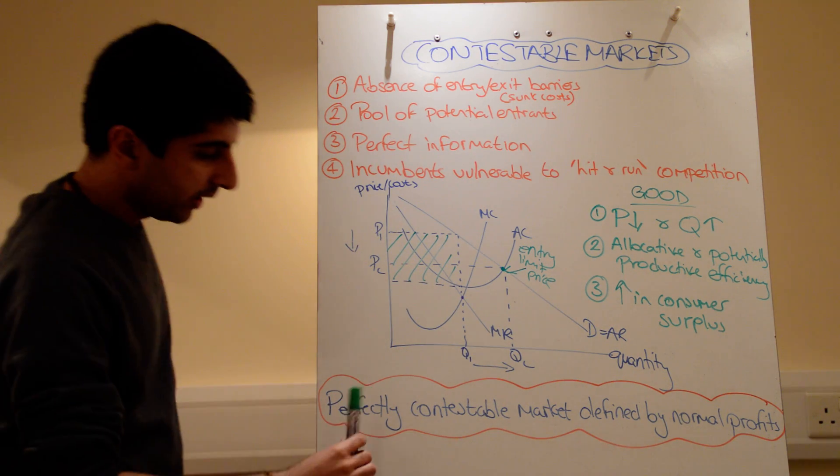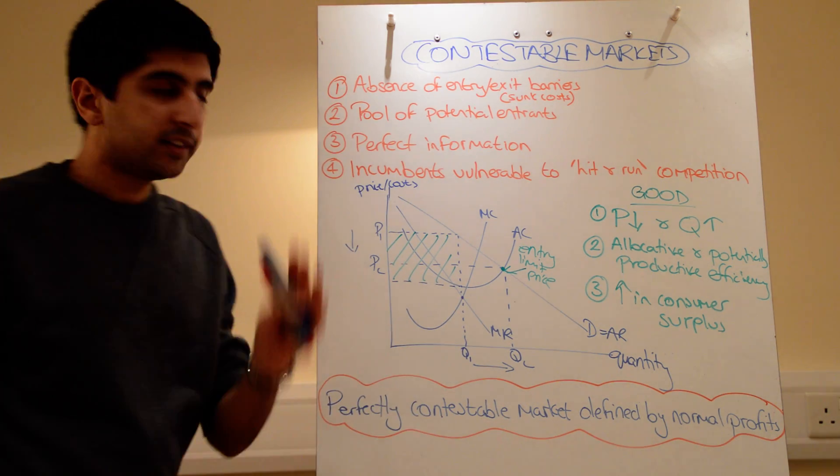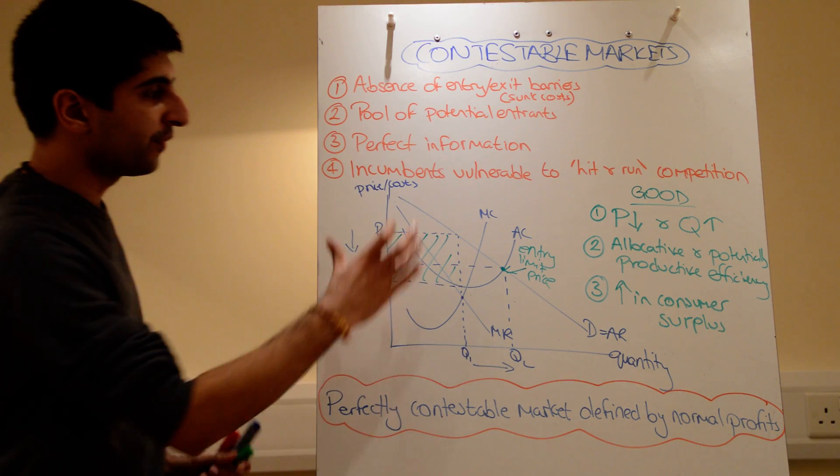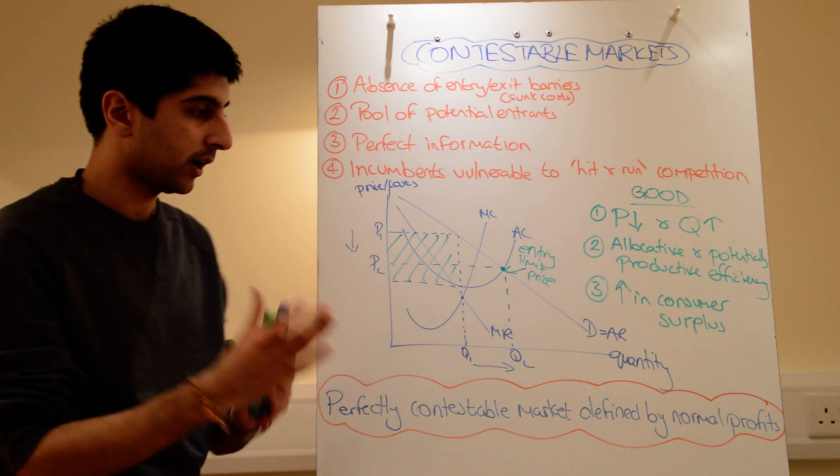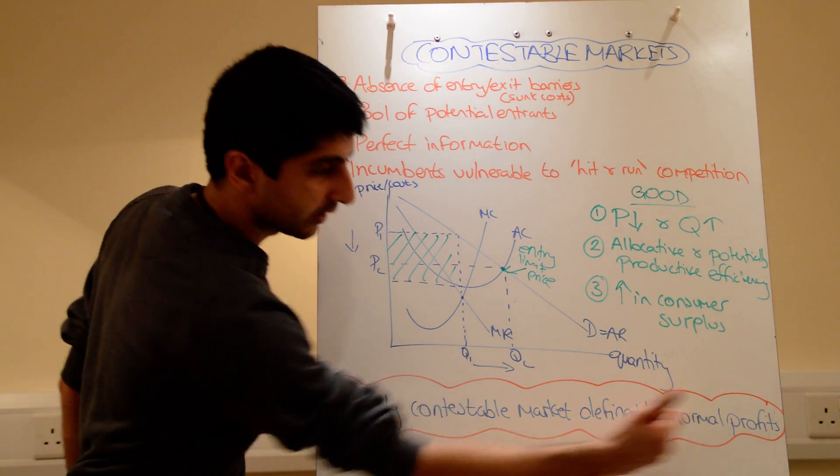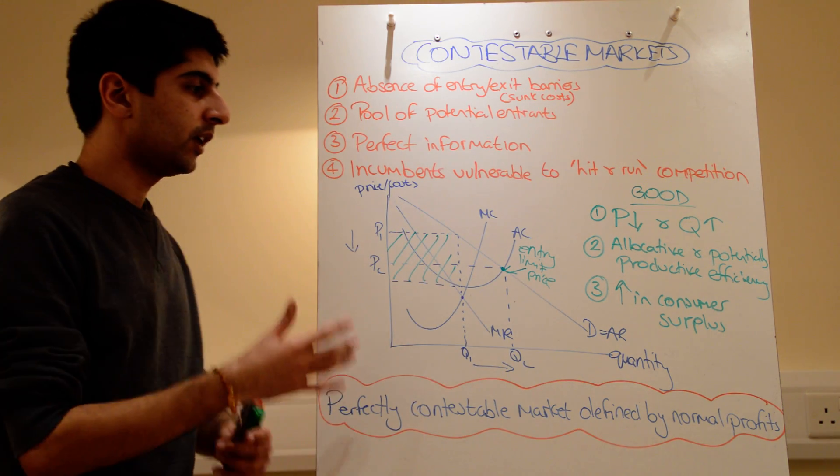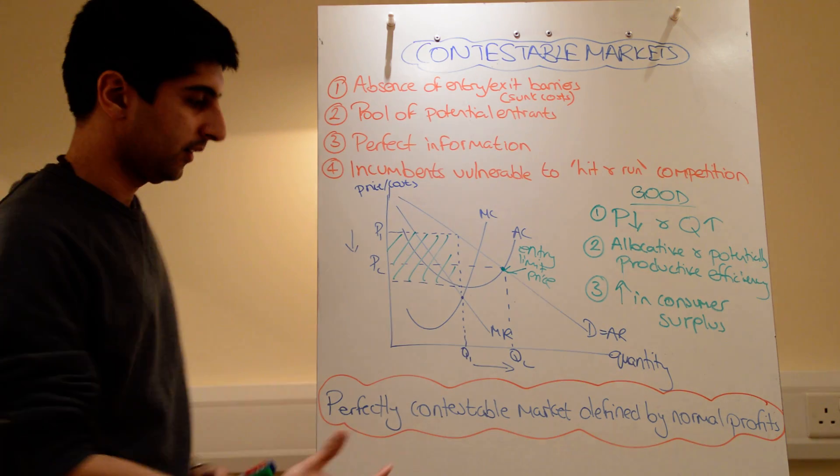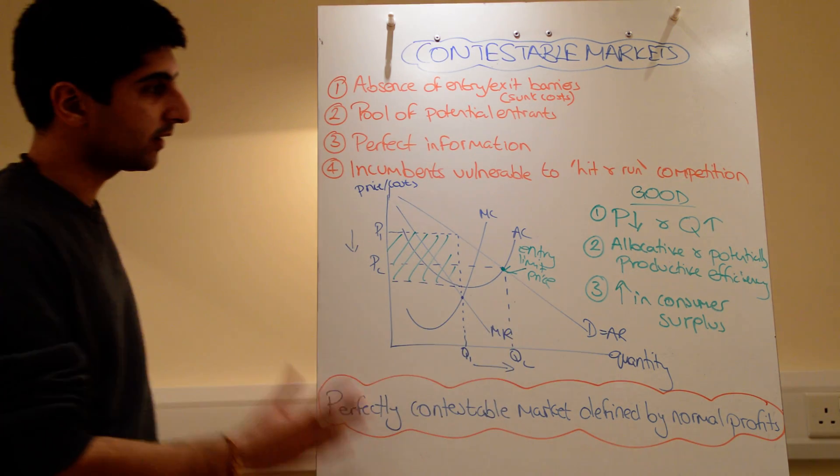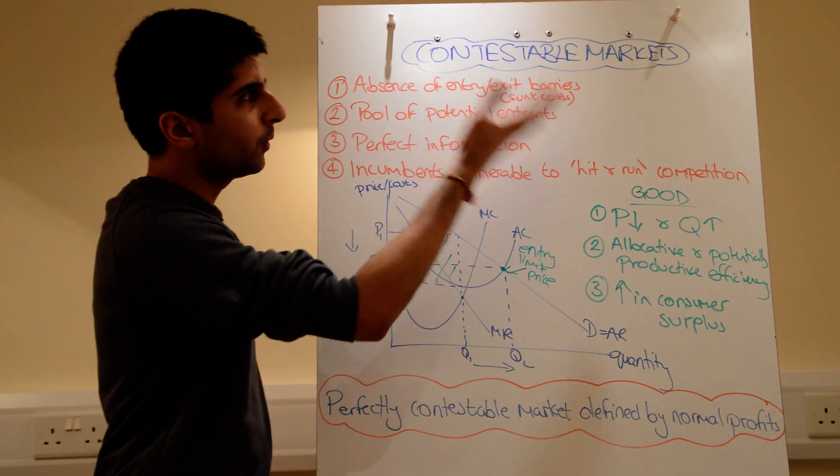The key thing and takeaway is this bit down here. The definition of contestable markets, or perfectly contestable markets, is that normal profits are going to be made. Normal profits have to be made to reduce the incentives for new firms to get in. So perfectly contestable markets, defined like that. But at the same time, you could say, well, why are contestable markets not so good?